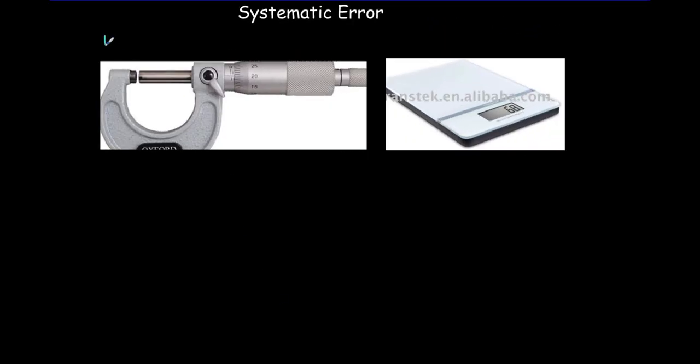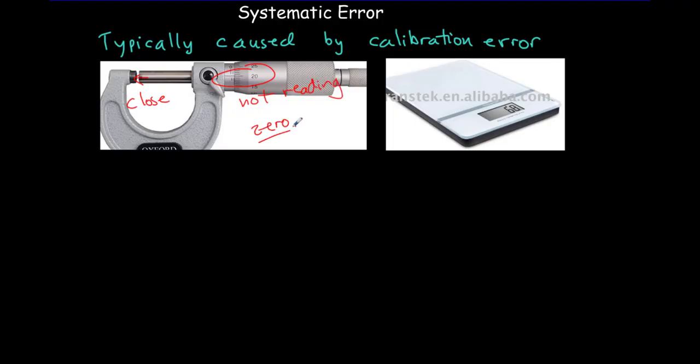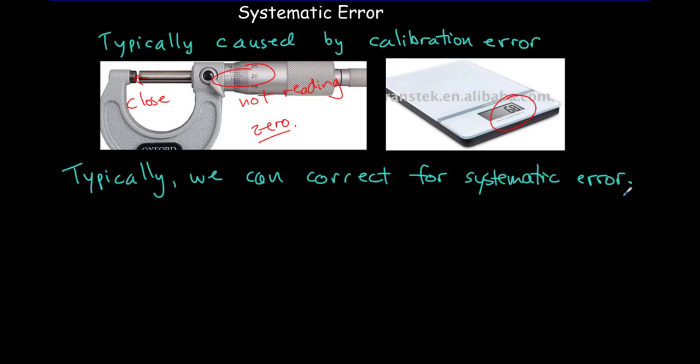So systematic error is typically caused by calibration error. So for instance, maybe you close this caliper, and yet you look here, and it's not reading zero. That means you have a calibration error, but you would be able to correct for it, by adding or subtracting that amount from your measurements. Or perhaps there's nothing on your scale, and you notice that there's a reading on your scale. That's going to throw all of your measurements off by that amount. So typically, we can correct for systematic error. And in that case, it wouldn't be a problem.